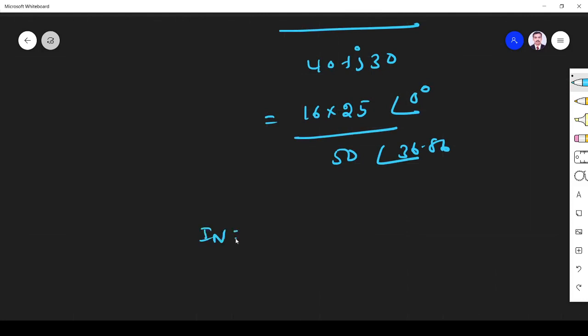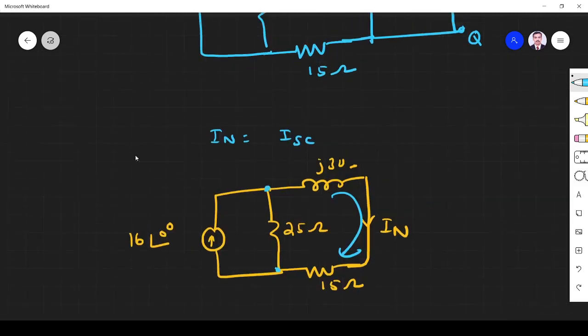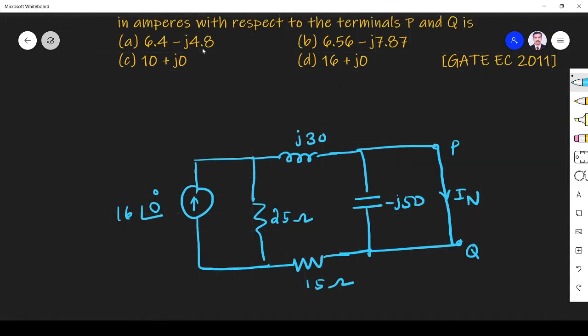So in rectangular format it is 6.4 minus j4.79. 6.4 minus j4.79, so option A is the right answer.